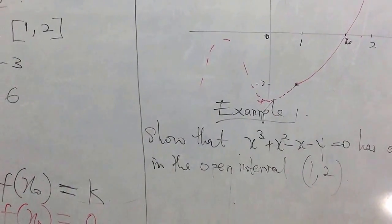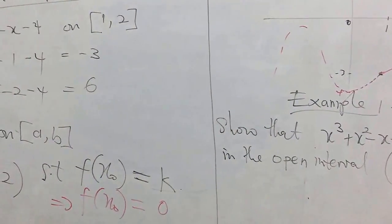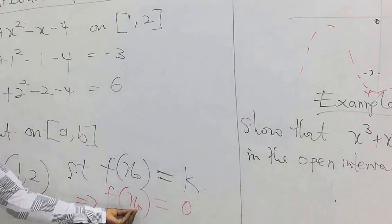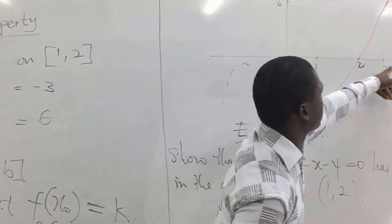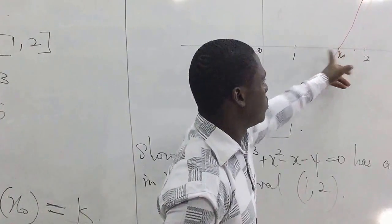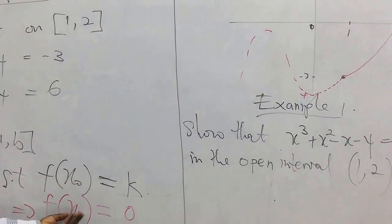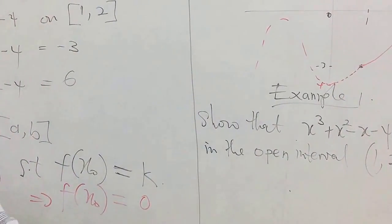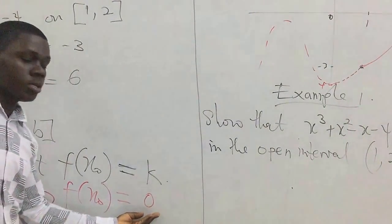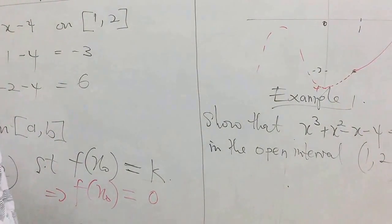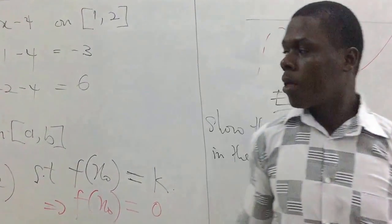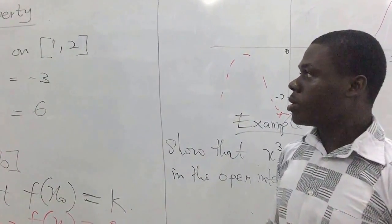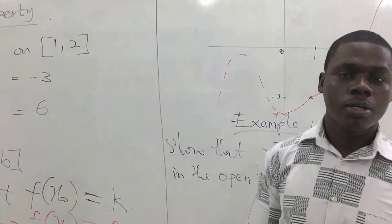This particular function satisfies the box property because it is continuous on the interval and for any value between f(1) = -1 and f(2) = 6, we see that zero is between these values, and the function value gives us zero. It means there exists a solution in this open interval, and that solution is zero. I hope you are following this — we shall meet again to look at another example as far as this property and its applications are concerned. Thank you very much.